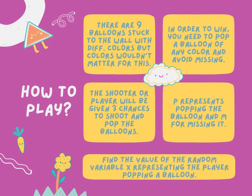This game is Pop the Balloon. Here's how you can play it. There are 9 balloons packed in the wall with different colors, but colors wouldn't matter to us. In order to win, you need to pop a balloon of any color and avoid missing it. The player will be given 3 chances to shoot and pop the balloon. P represents popping the balloon and M for missing it. Find the value of the random variable X representing the player popping the balloon.